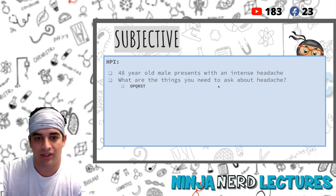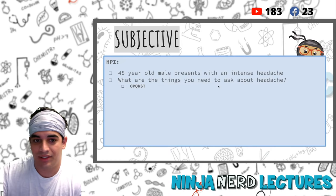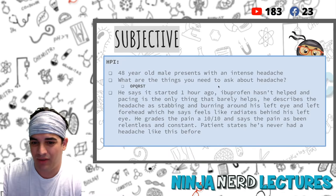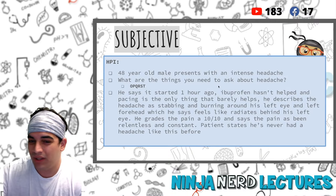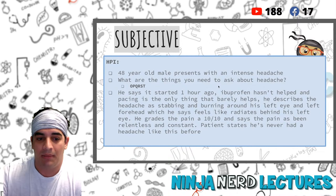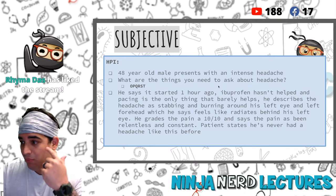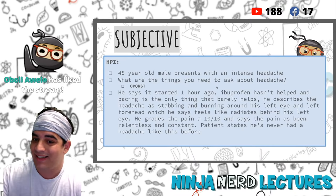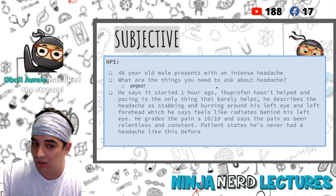When we OPQRST this guy's chief complaint, he says it started about an hour ago. Ibuprofen hasn't helped much - the only thing that helps a little is when he walks around and paces. He describes the headache as stabbing and burning, located primarily around his left eye and left forehead, with the pain radiating behind his left eye. He grades the pain a 10 out of 10 and says it's been relentless and constant.